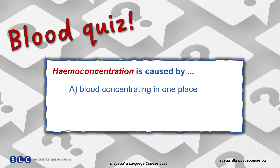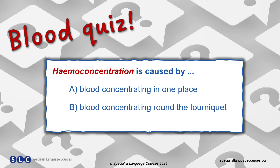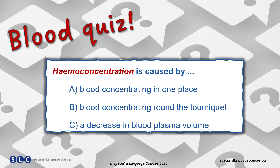A, blood concentrating in one place; B, blood concentrating around the tourniquet; or C, a decrease in blood plasma volume. The answer is C.